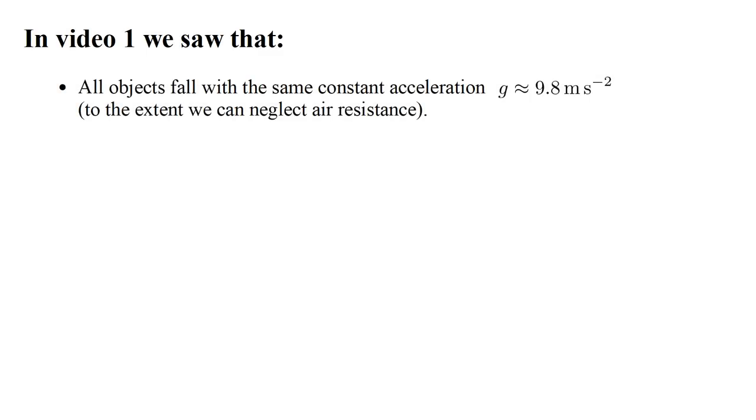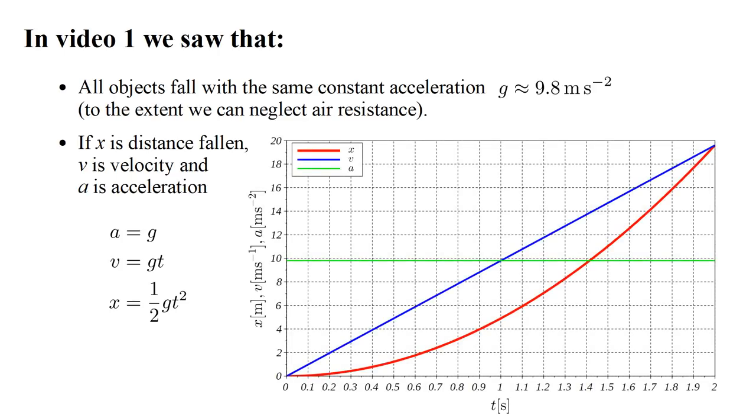In the first video we saw that, to the extent we can neglect air resistance, near Earth's surface, all objects fall with the same constant acceleration, approximately 9.8 meters per second squared. If x is distance fallen, v is velocity, and a is acceleration, then a equals g, v equals g t, and x equals one-half g t squared. a is a constant, v varies linearly with time, and x varies quadratically with time.